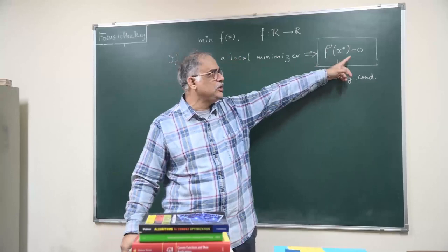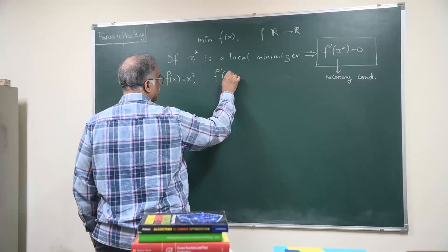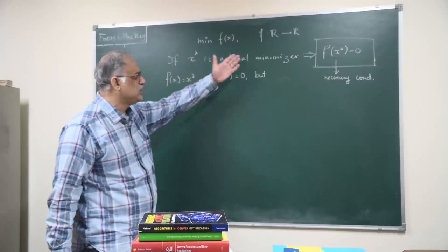Example, f(x) equal to x cubed. So f'(0) is zero, but zero is not a local minimizer or maximizer. So instead of a minimizer, you can put a maximizer also.